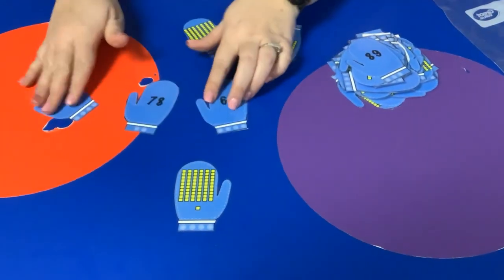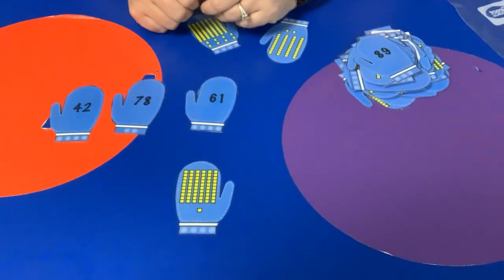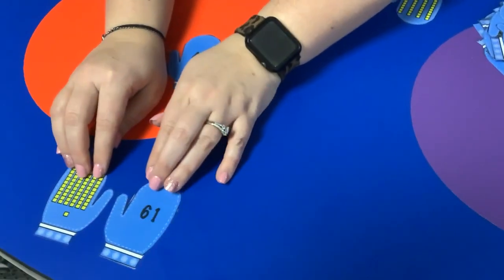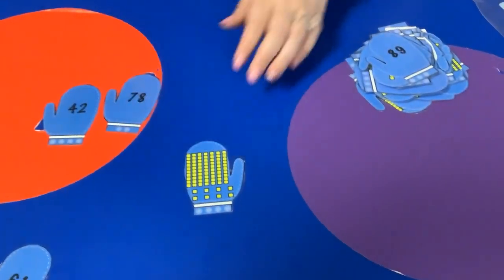I need to find the mitten that shows 61. There's 61, so I put them together and put them to the side. All right, let's do another one.